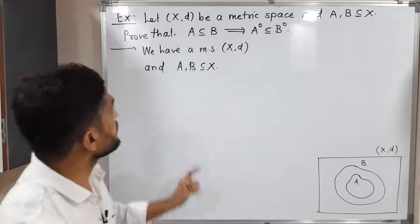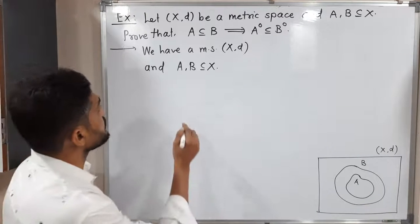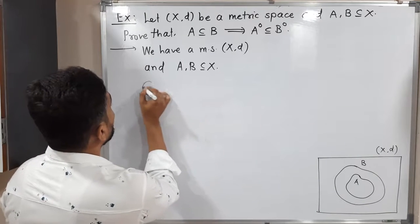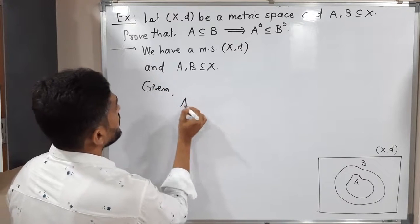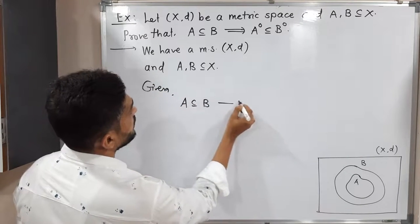So let me write the given information. We have a metric space (X,d), A,B ⊆ X. The given information is A ⊆ B. I am calling it as (1).